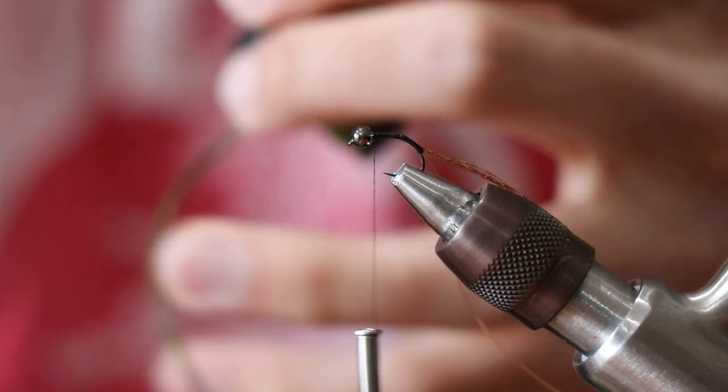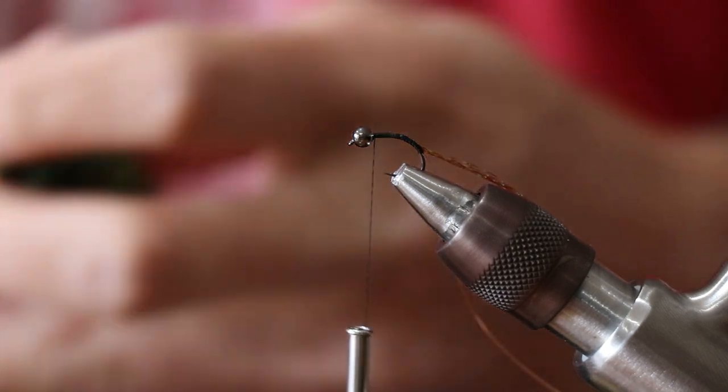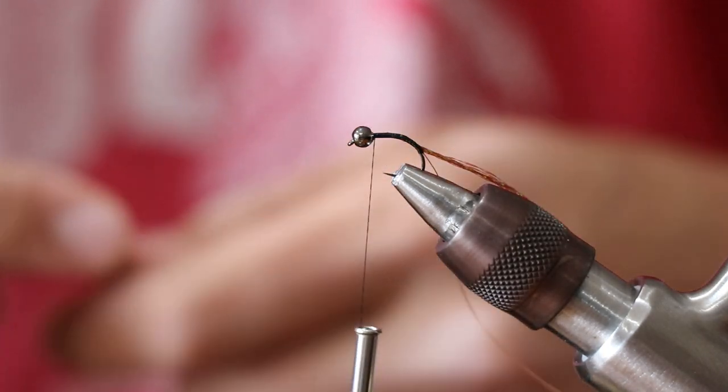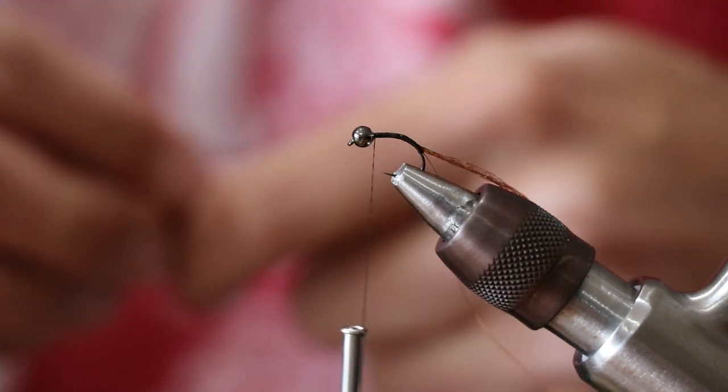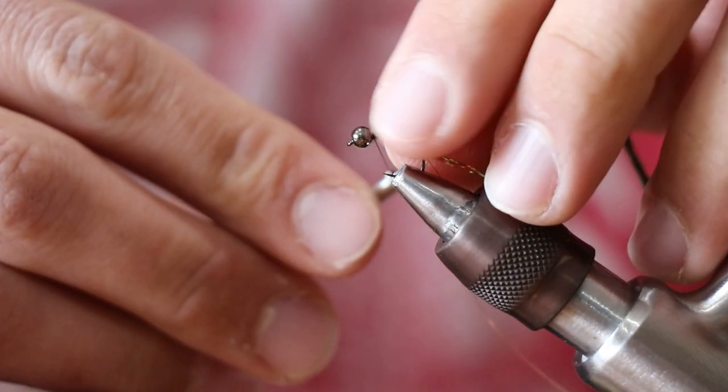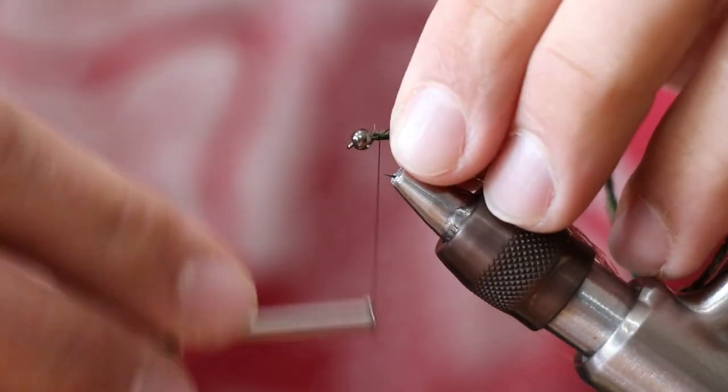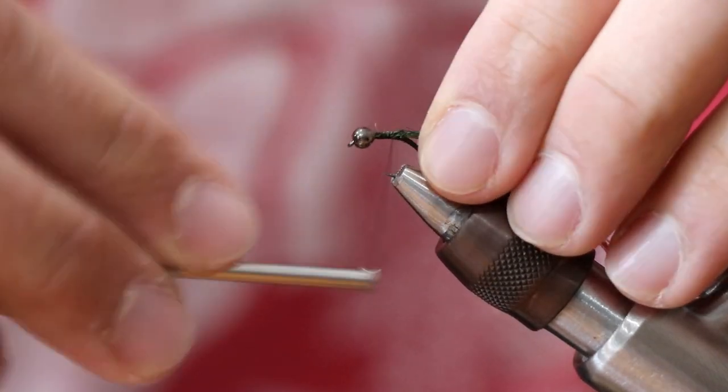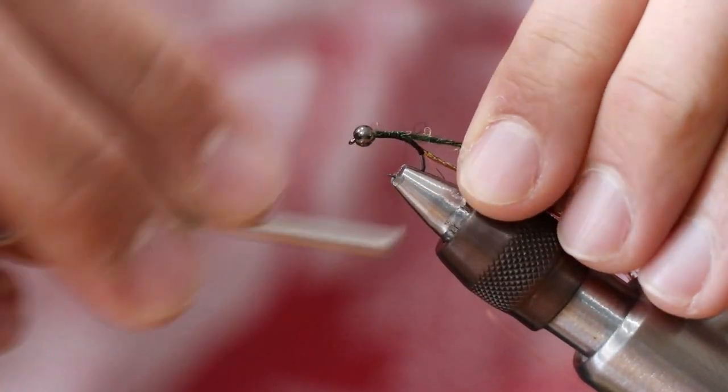For the main body, I'm going to be using some Semperfly dirty bug yarn in an olive caddis. You can also use any other colors, but this is just one of the ones I like a lot. I think it looks really good on there. I'm just going to catch that material.